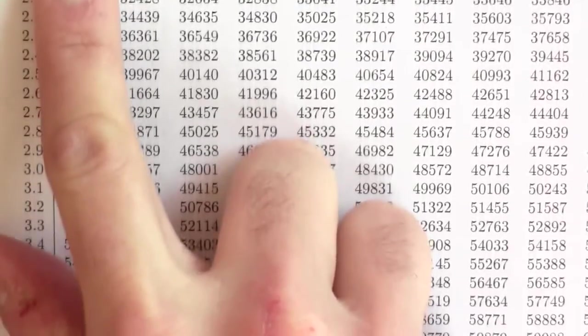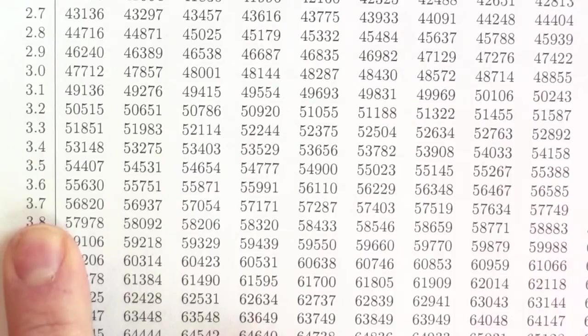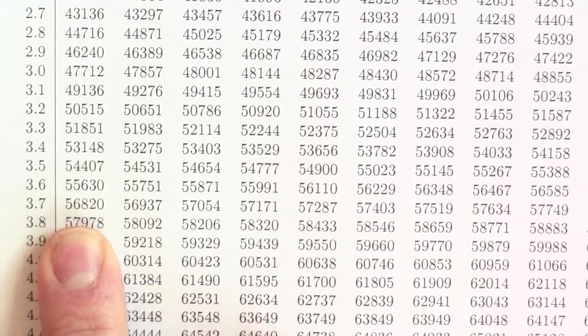Then, instead of looking up 37, I'm going to look up 3.70 in my table. And the log of 3.70 is about .56820. I'm going to add together those two logs, and I get .79865.